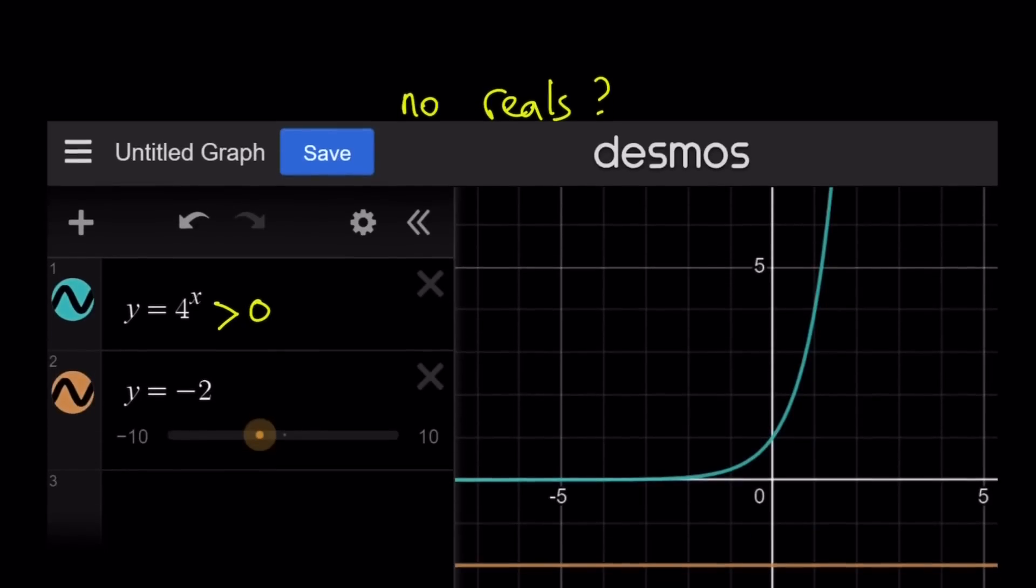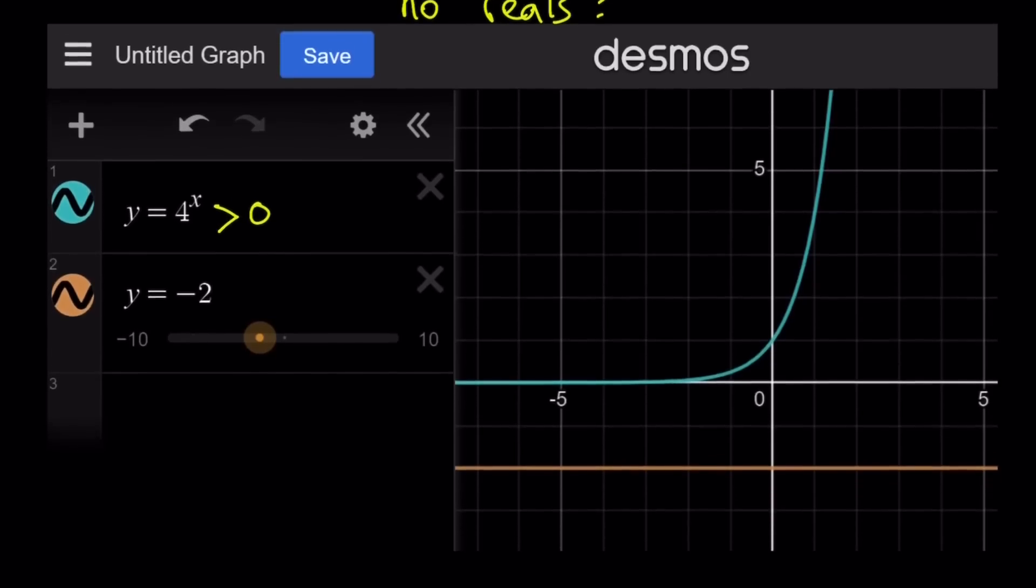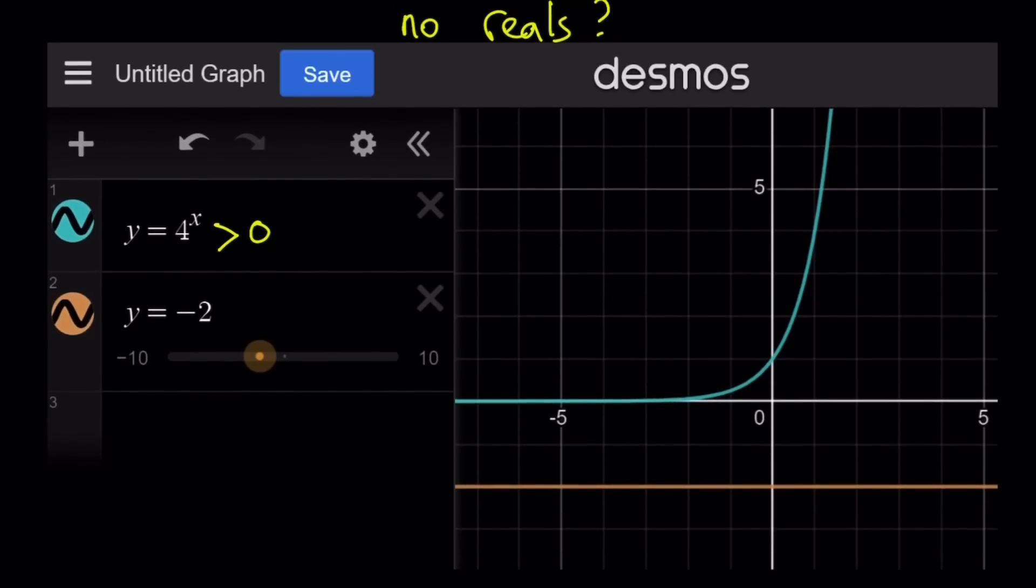So I graphed two functions for you, y equals 4 to the power x and y equals negative 2. And I did write no reals. What is that supposed to mean? They don't intersect. So there are no real solutions because 4 to the power x is always positive. And it is going to stay above the x-axis even though it looks like it's overlapping. They are not intersecting and the horizontal line is not going to intersect our graph.